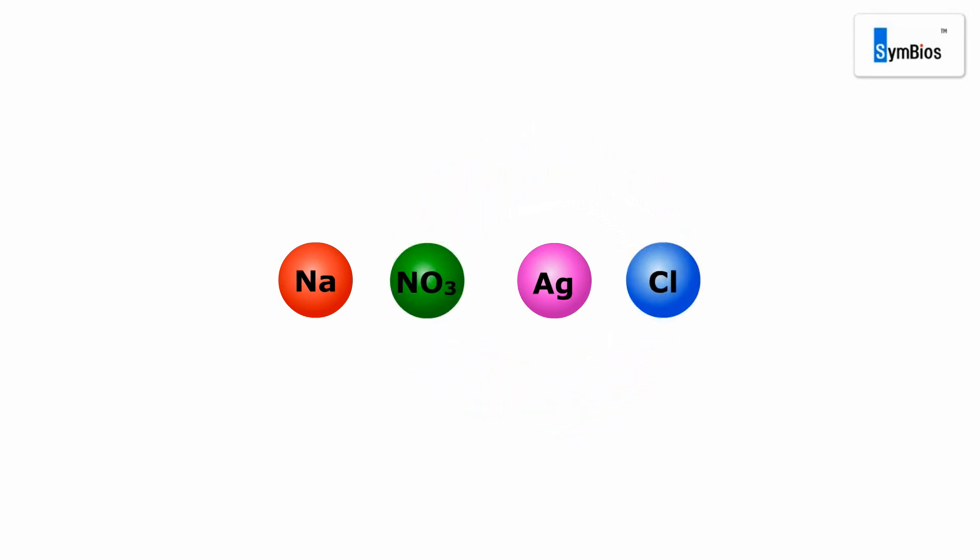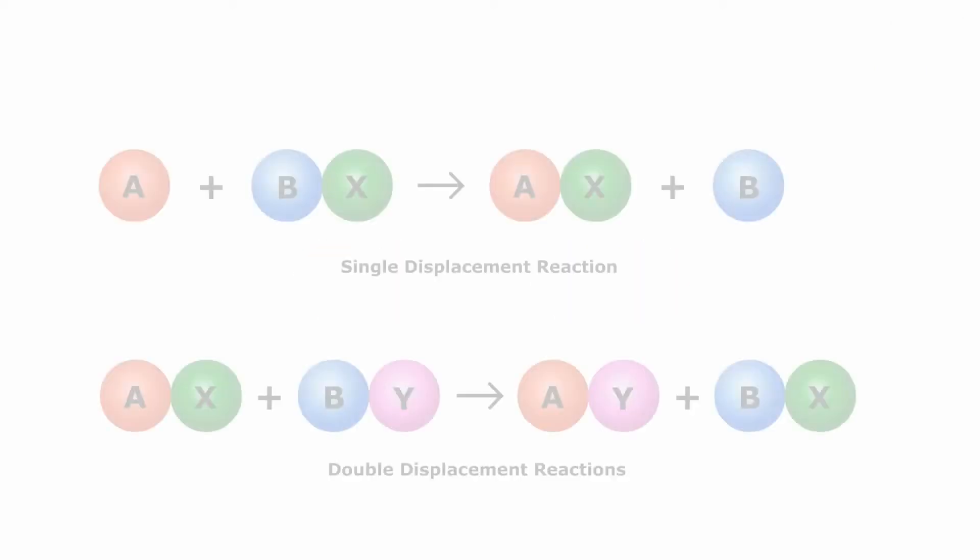Thus, two parts from two different reactants, i.e. chloride and nitrate, have been displaced. Chloride and nitrate actually have exchanged their places with each other. As both the reacting compounds have undergone displacement, it is a double displacement reaction.